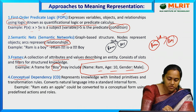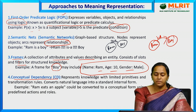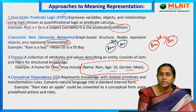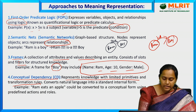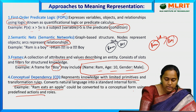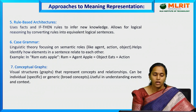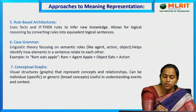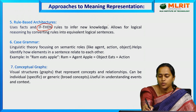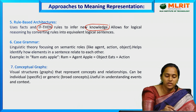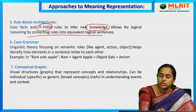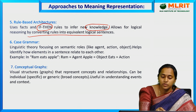Next, conceptual dependency — this represents knowledge with limited primitives and transformation rules. For example, 'Ram eats an apple' could be converted into conceptual form using predefined actions and roles. Then, rule-based architecture uses if-then rules to infer new knowledge, allowing logical reasoning by converting rules into equivalent logical sentences.